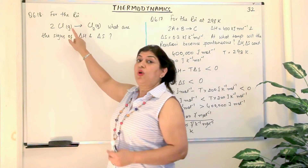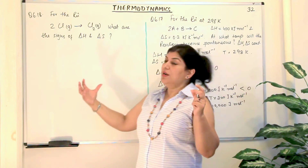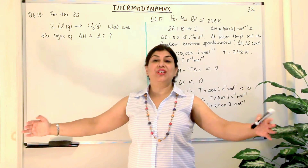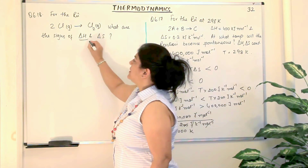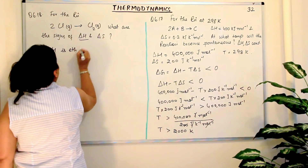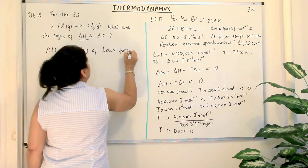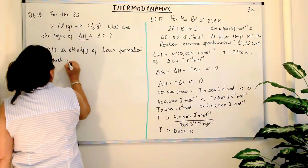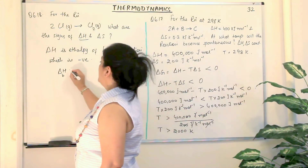We know that is called bond formation. We've studied bond formation enthalpy and bond dissociation enthalpy. Whenever bonds are formed, it leads to stability and release of energy — bond formation is an exothermic process. So if it is an exothermic process, the sign for delta H should be negative. Delta H here is the enthalpy of bond formation, which is negative.